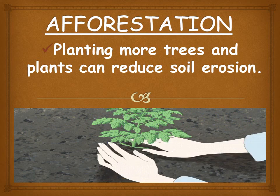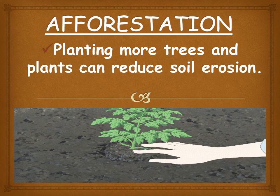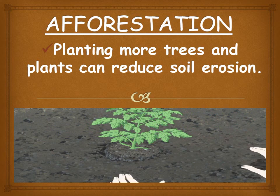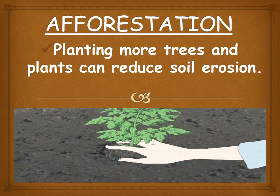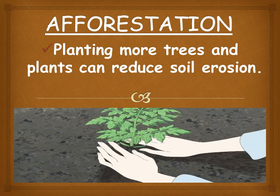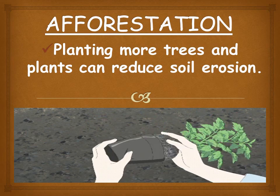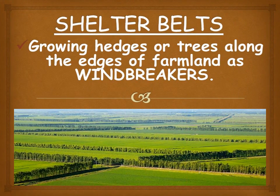Planting trees, or afforestation, is very effective in preventing soil erosion, especially in hilly areas. Grass grown on slopes prevents soil erosion caused by water flowing down the slopes. Growing hedges or trees along the edges of farmland as windbreakers reduces soil erosion by reducing the speed of the wind.